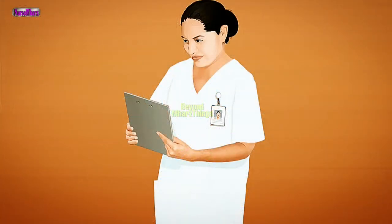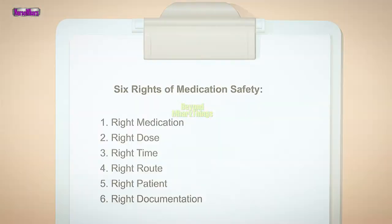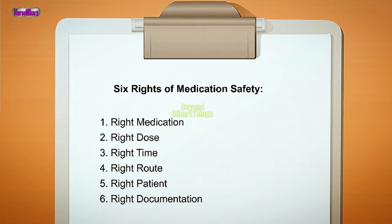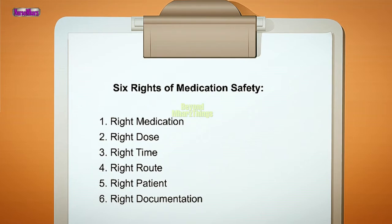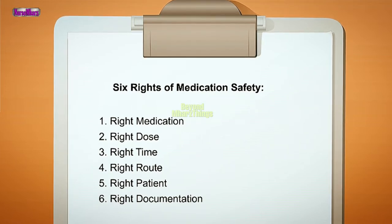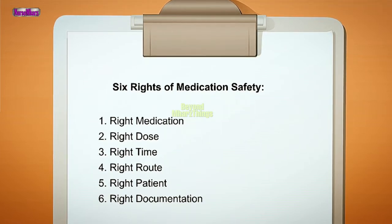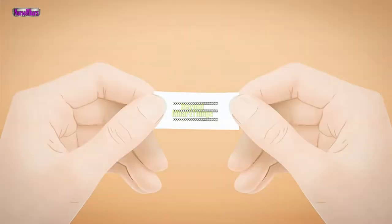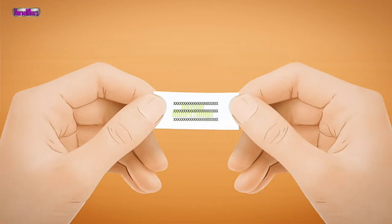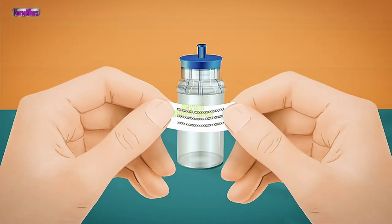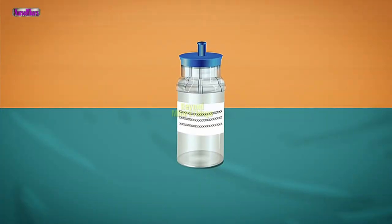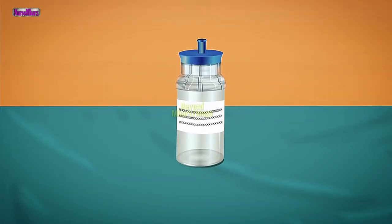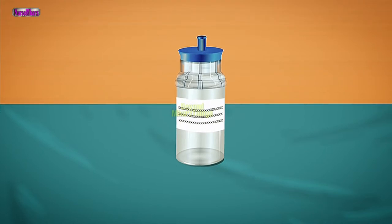Check accuracy and completeness of the practitioner's original order. Ensure the six rights of medication safety: right medication, right dose, right time, right route, right patient, and right documentation. Label all medications, medication containers, and other solutions. The only exceptions are medications still in their original container or medications administered immediately by the person who prepared them.